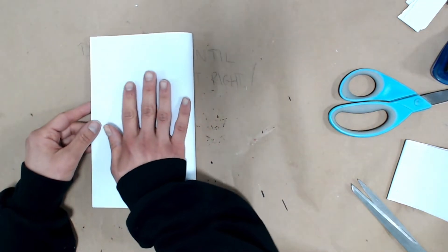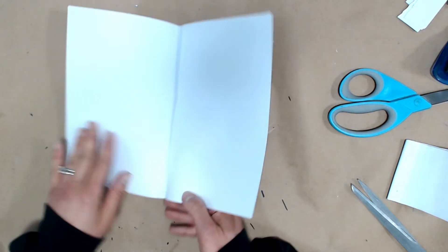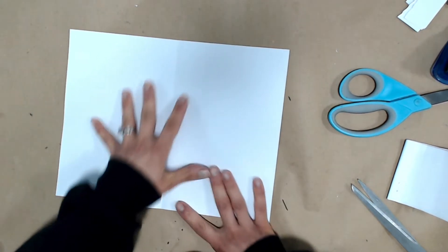You're going to fold the papers in half, crease it, open it back up again, and now cut right down the middle.